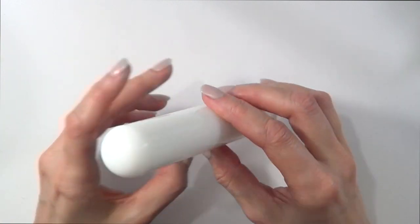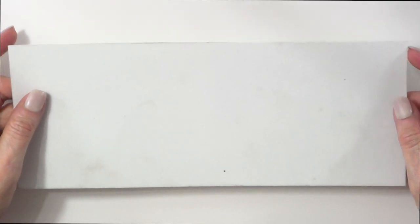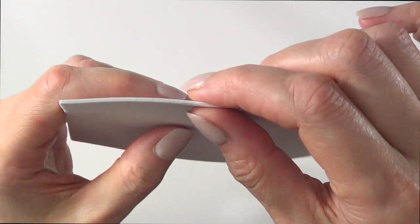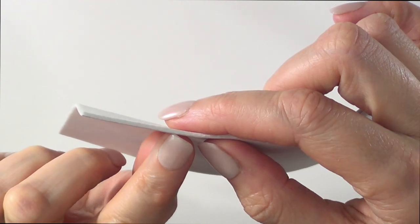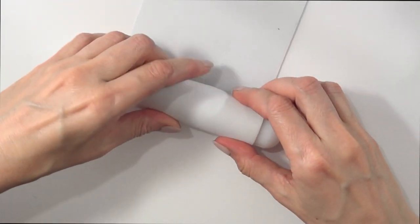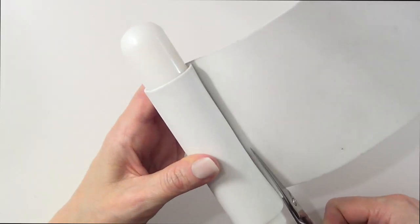Then we need foamy paper. I'm using just a leftover piece that I have, and I'm choosing to work with foamy paper because of how thick it is. The first thing that I'm going to be doing is wrapping my foamy paper around my rolling pin. I'm just going to cut that.